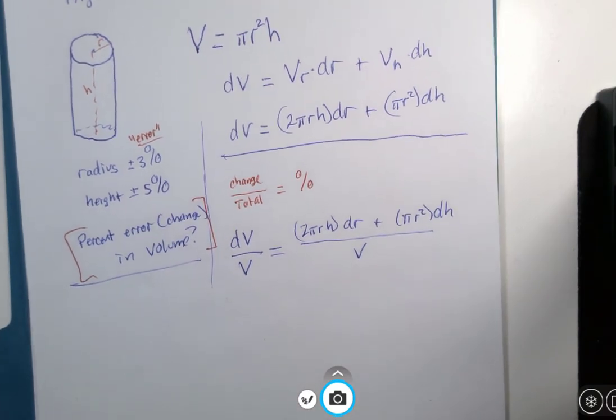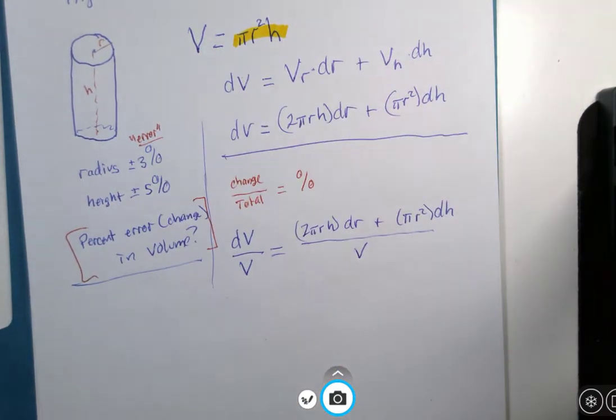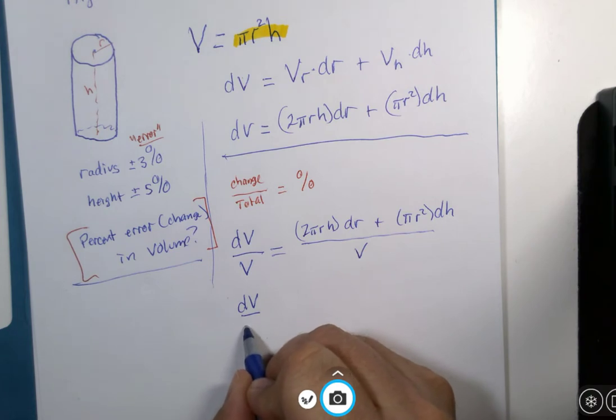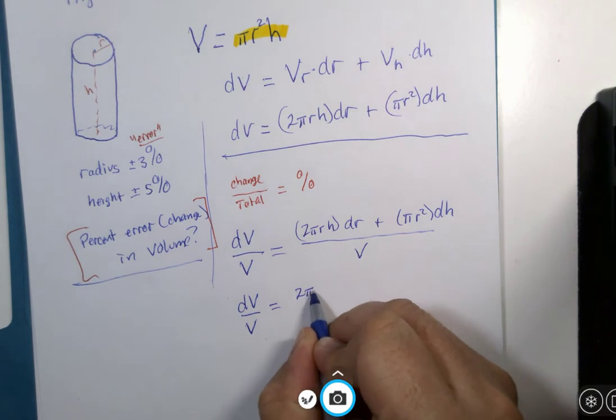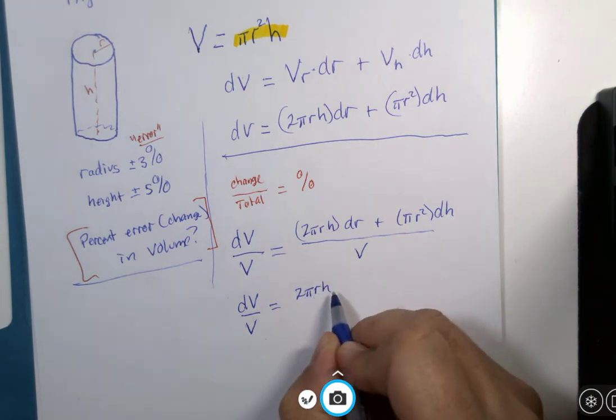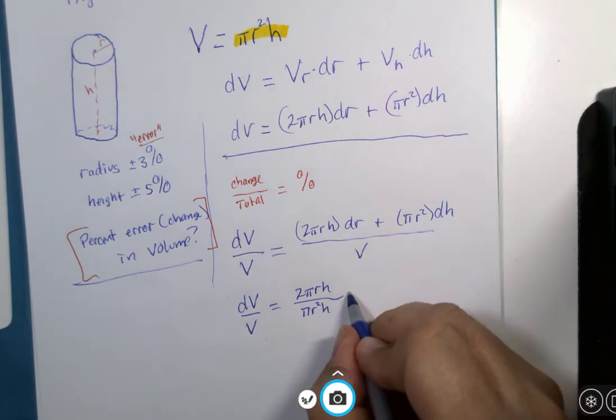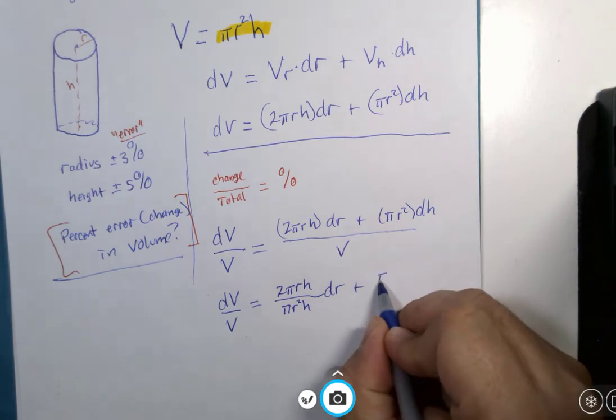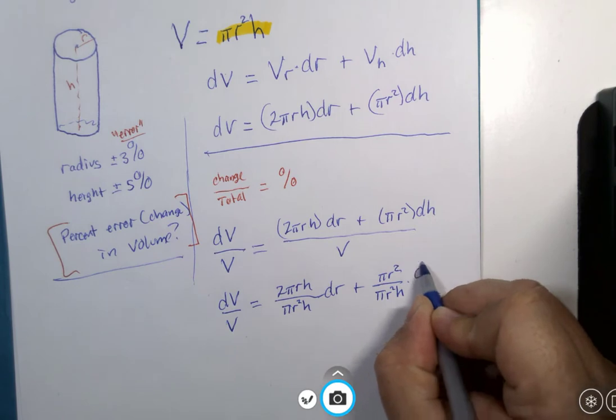Volume is given by πr²h. And if I want to calculate this approximate percentage error here, 2πrh over πr²h is the volume, dr, plus πr² over πr²h dh.